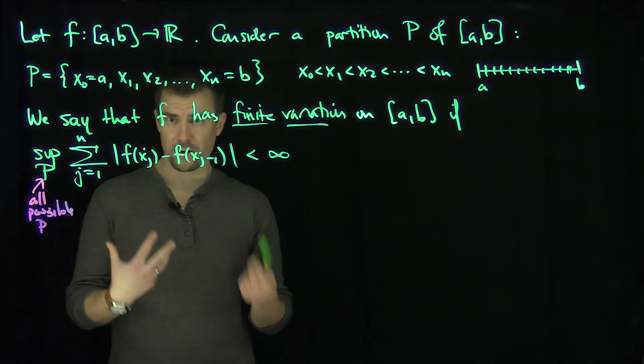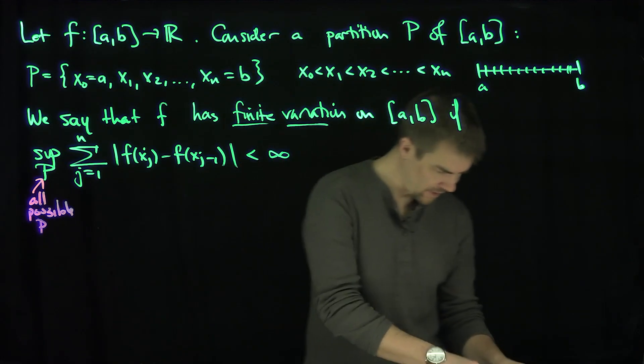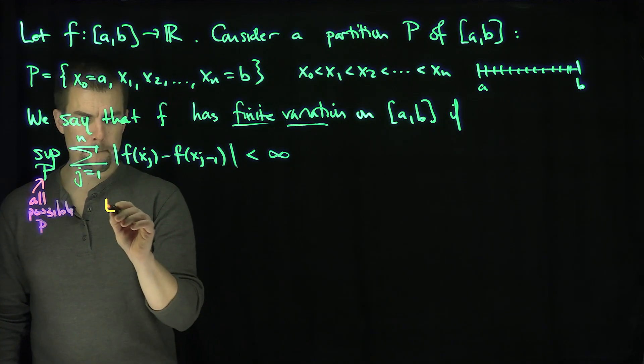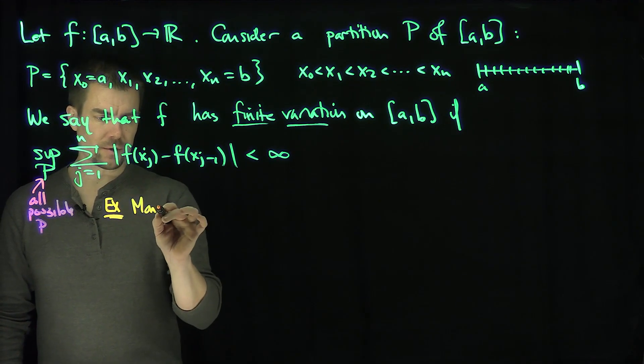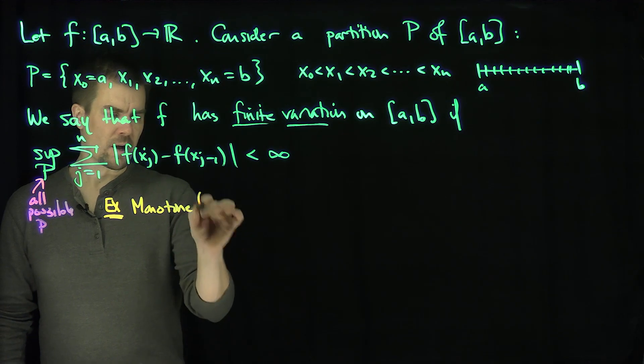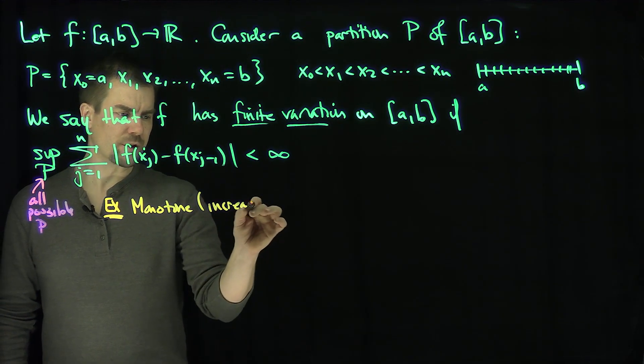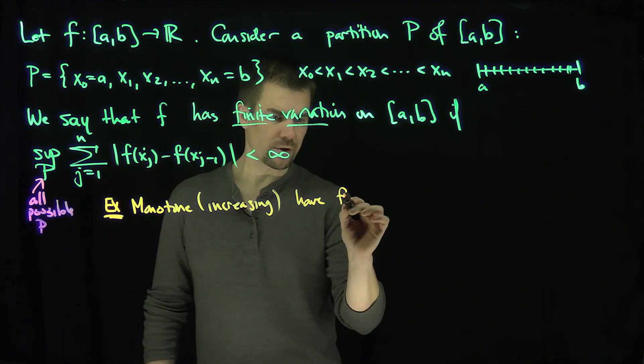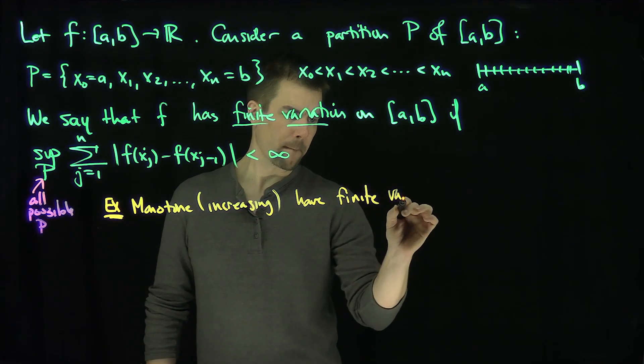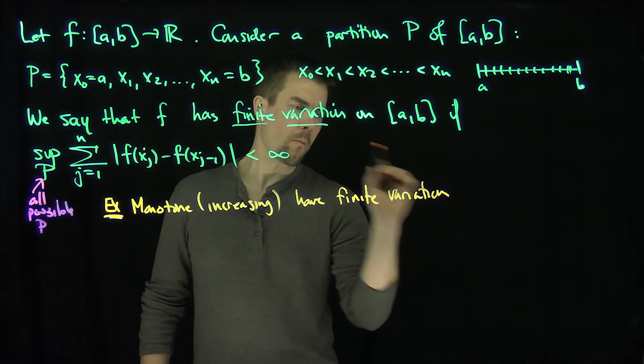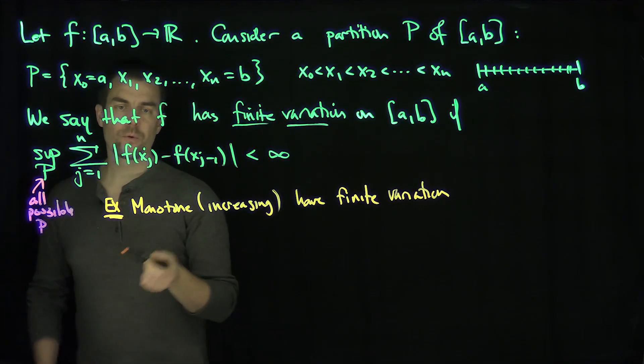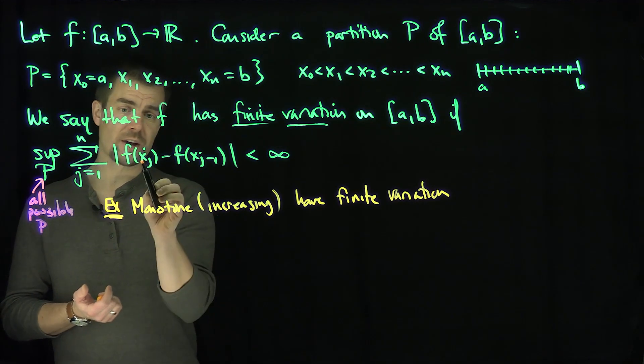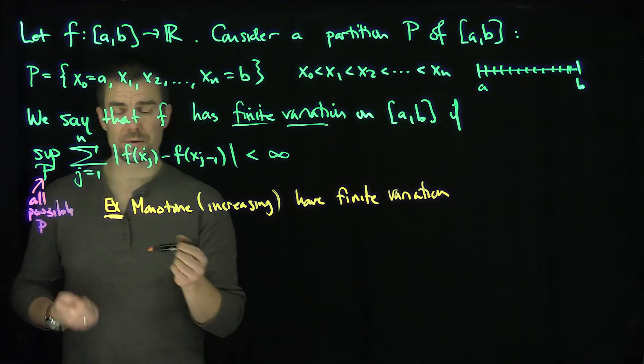Let me give you an example of a class of functions which has finite variation. Example: monotone functions. Let's just say monotone increasing—decreasing works the same—have finite variation. How would I prove that? Well, the whole idea is that if the function is monotone, then f(xj) is larger for increasing functions, so f(xj) > f(xj-1), and I can drop the absolute values.